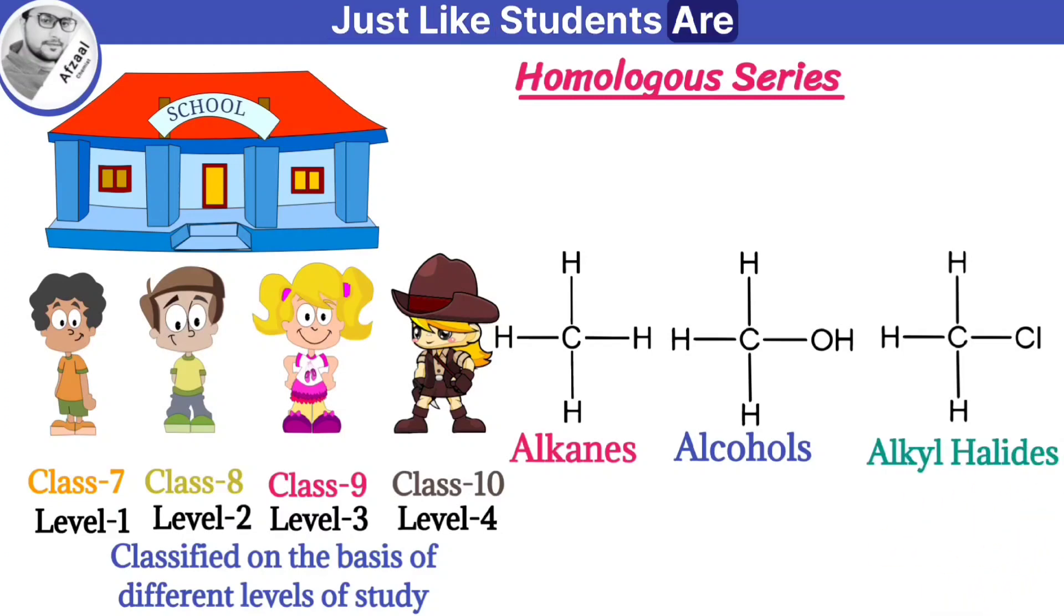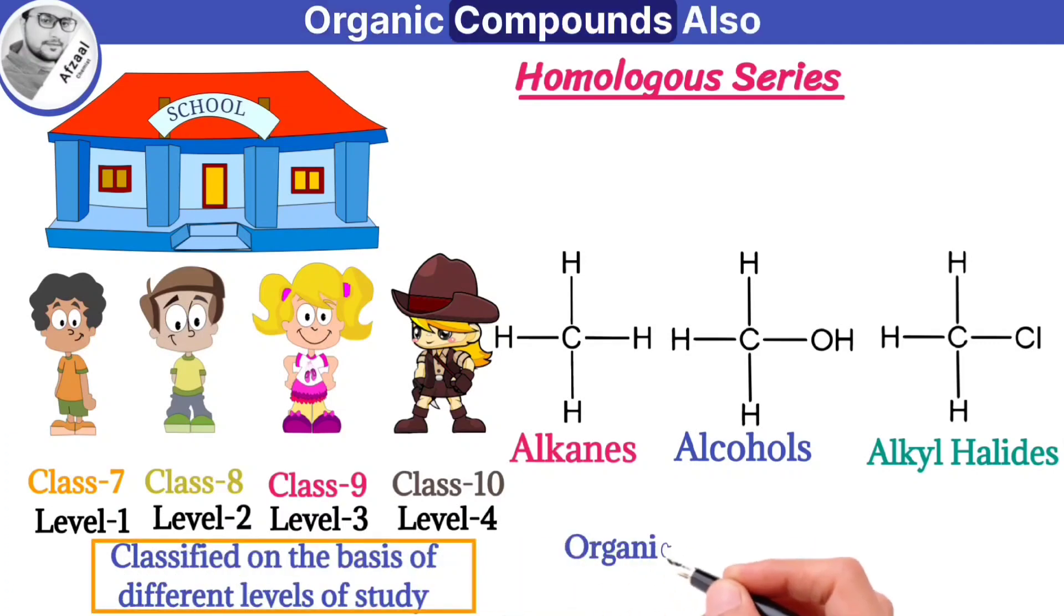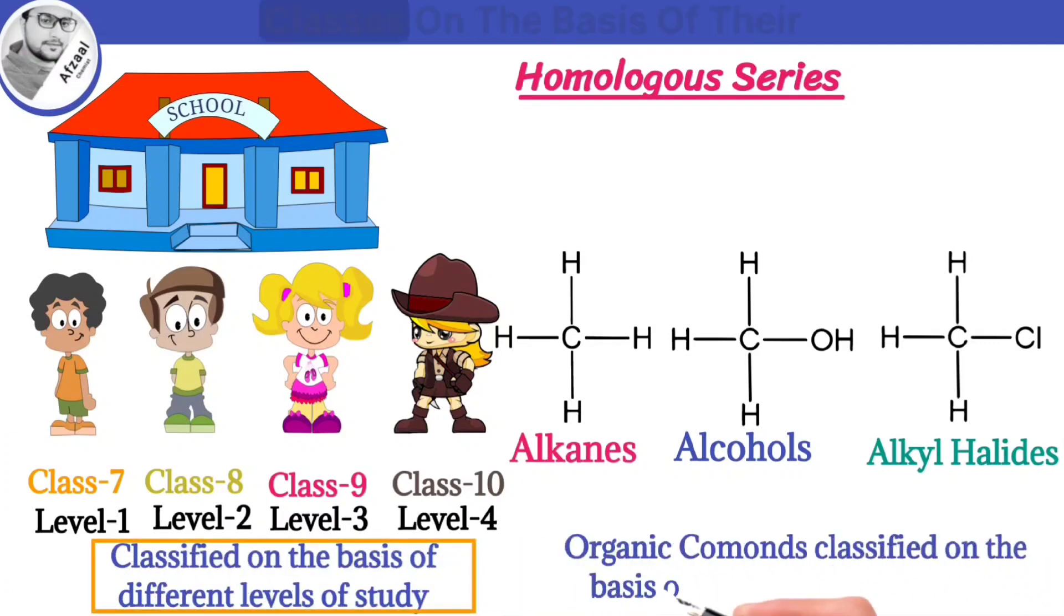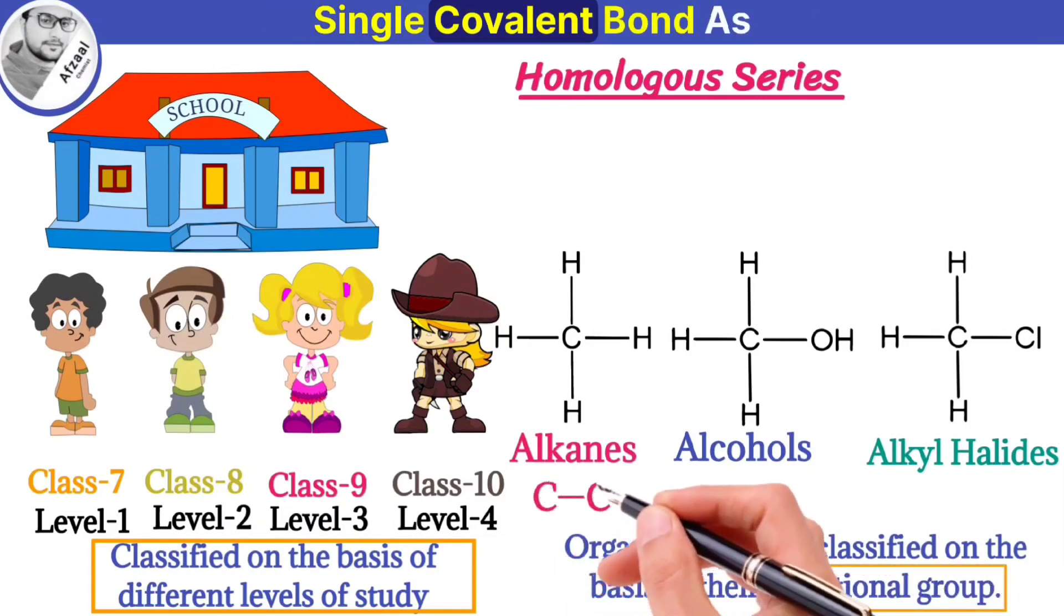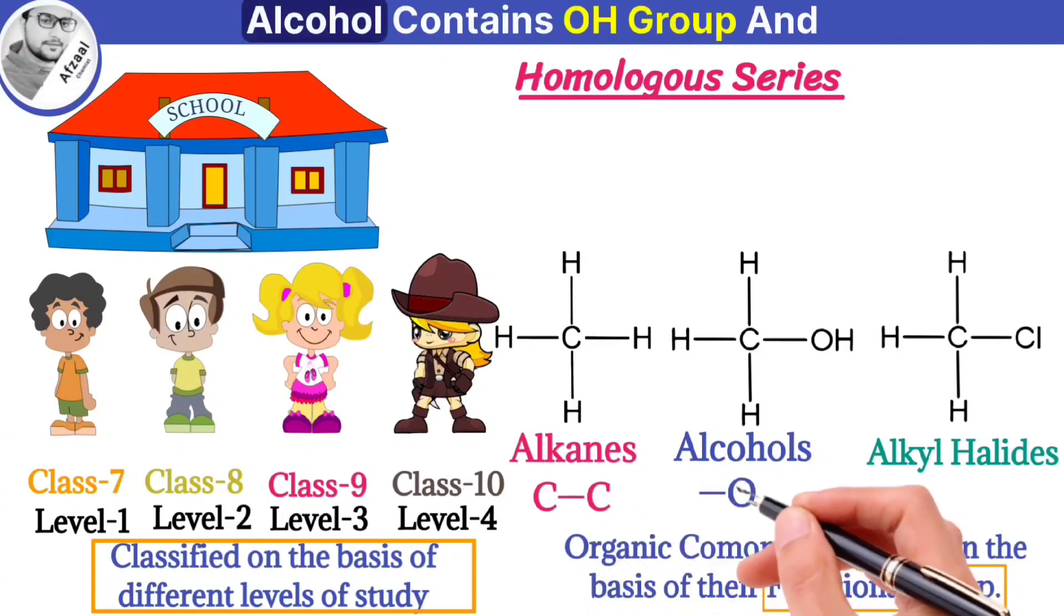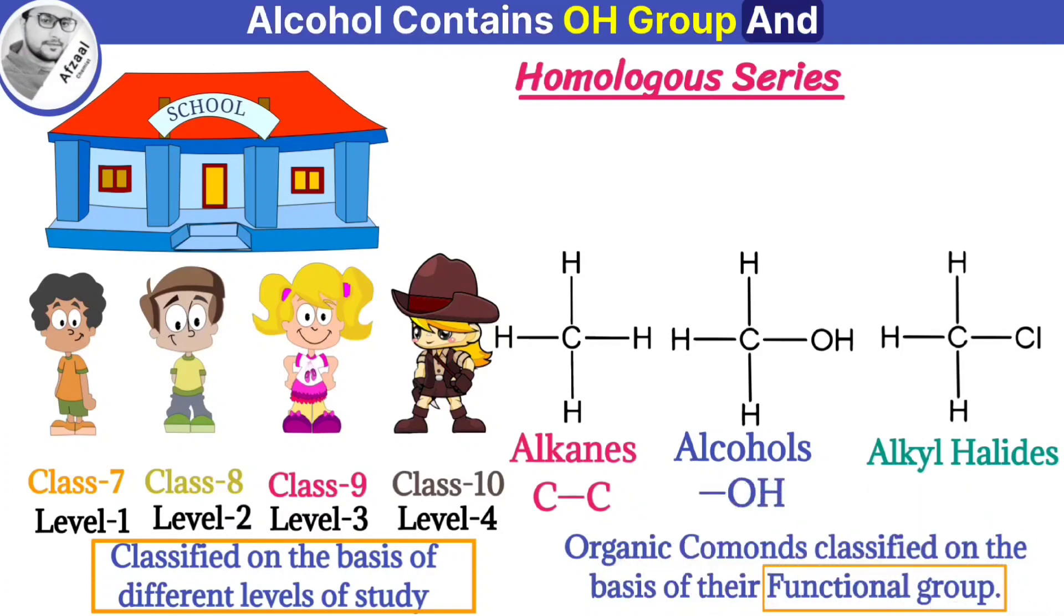Just like students are classified on the basis of different levels, organic compounds are also classified into different classes on the basis of their functional groups. Alkane contains carbon-carbon single covalent bond as functional group, alcohols contain OH group, and alkyl halides contain halogens as functional groups.